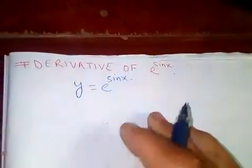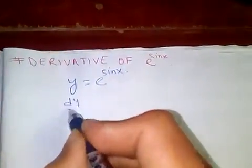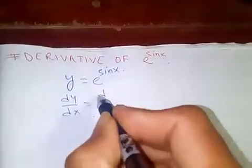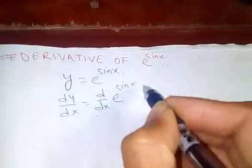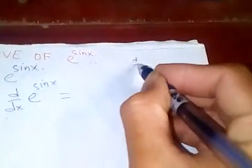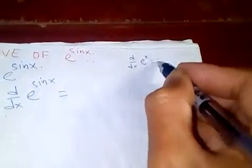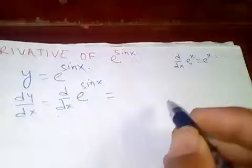sine x. Okay, now if you take the derivative with respect to x, so d by dx of e to the sine x. Okay, so we know the derivative of e to the x is e to the x. Okay, now applying